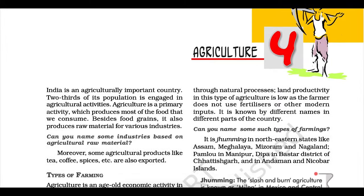Coffee. India is known in the world for its good quality coffee. The Arabica variety, initially brought from Yemen, is produced in the country. This variety is in great demand all over the world. Initially, its cultivation was introduced on the Baba Budan hills, and even today its cultivation is confined to the Nilgiris in Karnataka, Kerala, and Tamil Nadu.